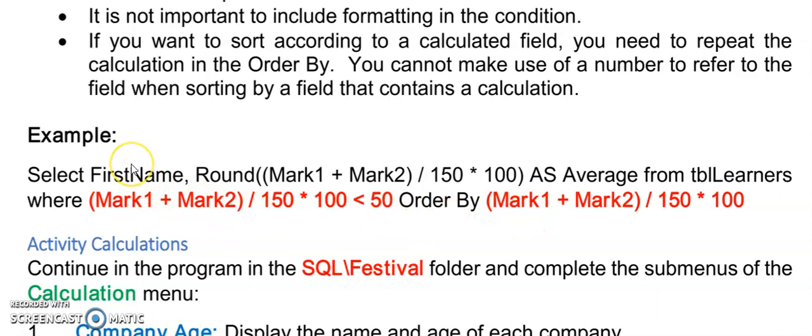We could have said sort these records according to the second field listed, but when you have calculations - the moment you're using plus, minus, divide or multiply in your calculations in that field - you can't use the number order of that field. You have to repeat the calculation in your ORDER BY.